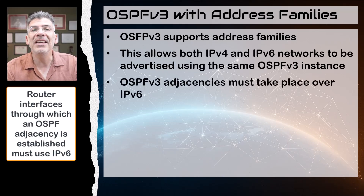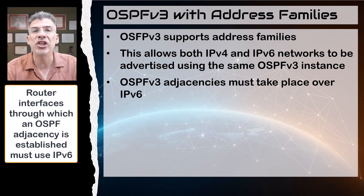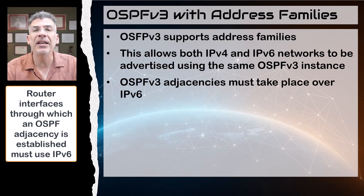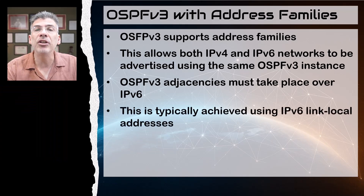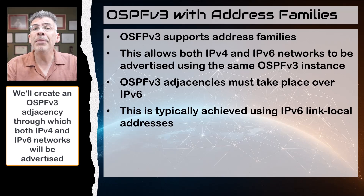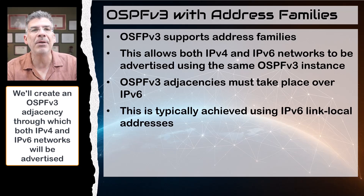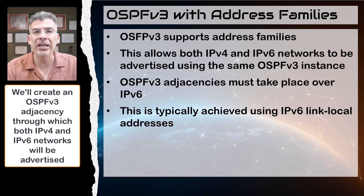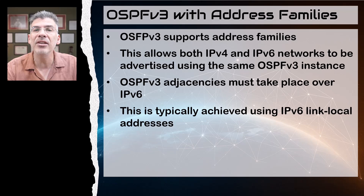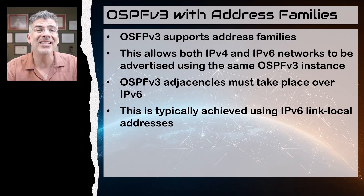In other words, the interfaces serving the OSPF adjacencies must be configured with IPv6. As we saw in the previous video, this is achieved using link-local IPv6 addresses. In this video, we'll be creating a topology where we advertise both IPv4 and IPv6 networks between two routers running OSPF version 3. This highlights the way OSPF version 3 functions in the presence of both IPv4 and IPv6 address spaces.